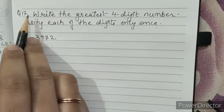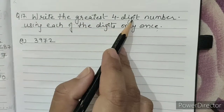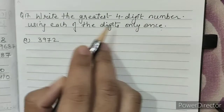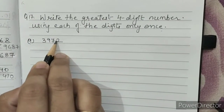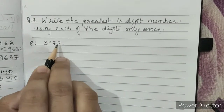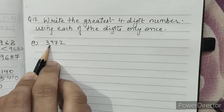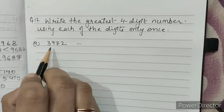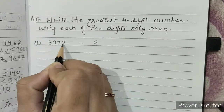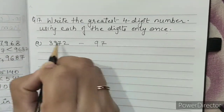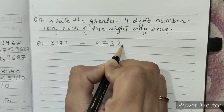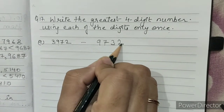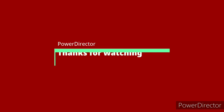Question 17: Write the greatest 4-digit number using each digit only once. The digits are 3, 9, 7, 2. We arrange them from largest to smallest: 9, then 7, then 3, then 2. Our answer is 9732, which is the greatest 4-digit number using these digits.